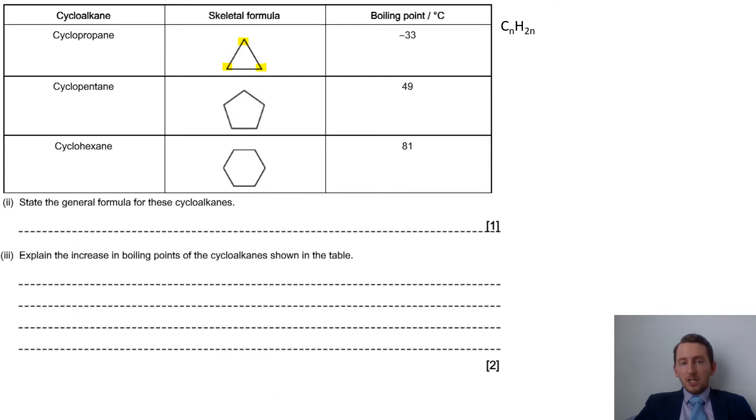Because each carbon has two bonds going to other carbons, it has two bonds left for hydrogens. So each carbon will have two hydrogens - that's six hydrogens with three carbons, giving C3H6, so CnH2n. Yes, that is the general formula for an alkene as well, but it's also our general formula for cycloalkanes.